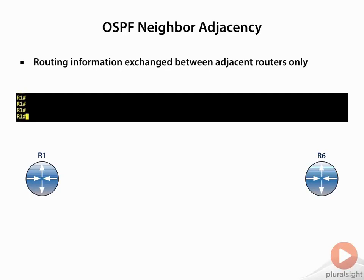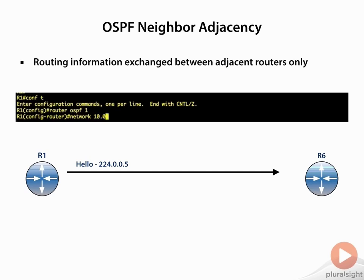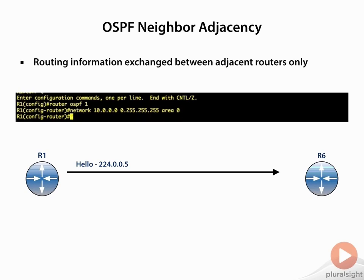Now let's look at how OSPF establishes a neighbor adjacency. We only exchange routing information between neighbors that are considered adjacent, and that's important to understand. In this example, we're going to send a hello to the multicast address 224.0.0.5, but not until we enable OSPF and use the network statement with a wildcard mask and apply this to an area will we see those hellos sent.